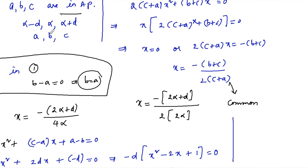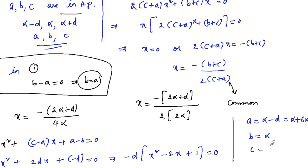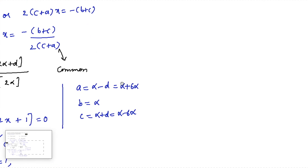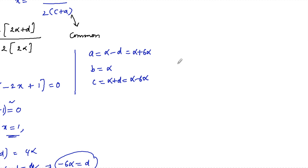Substituting d = −6α back into the values of a, b, c: a = α − d = α − (−6α) = 7α, b = α, and c = α + d = α + (−6α) = −5α.